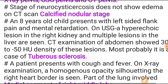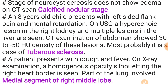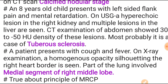An 8-year-old child presented with left-sided flank pain and mental retardation. USG showed a hyperechoic lesion in the right kidney and multiple lesions in the liver. CT examination of the abdomen showed lesion density of 32–50 HU. Most probable diagnosis is tuberous sclerosis.